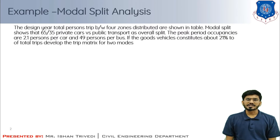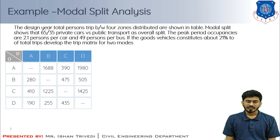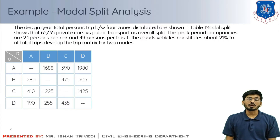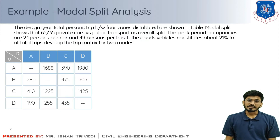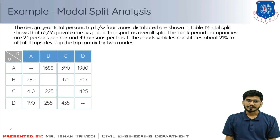The design year total person trips between four zones are distributed in an OD matrix in table form. You can see the interzonal trips by person. The modal split shows a 65/35 split: private car versus public transport. In simple words, out of 100 trips, 65 trips are done by cars and 35 by public transportation.